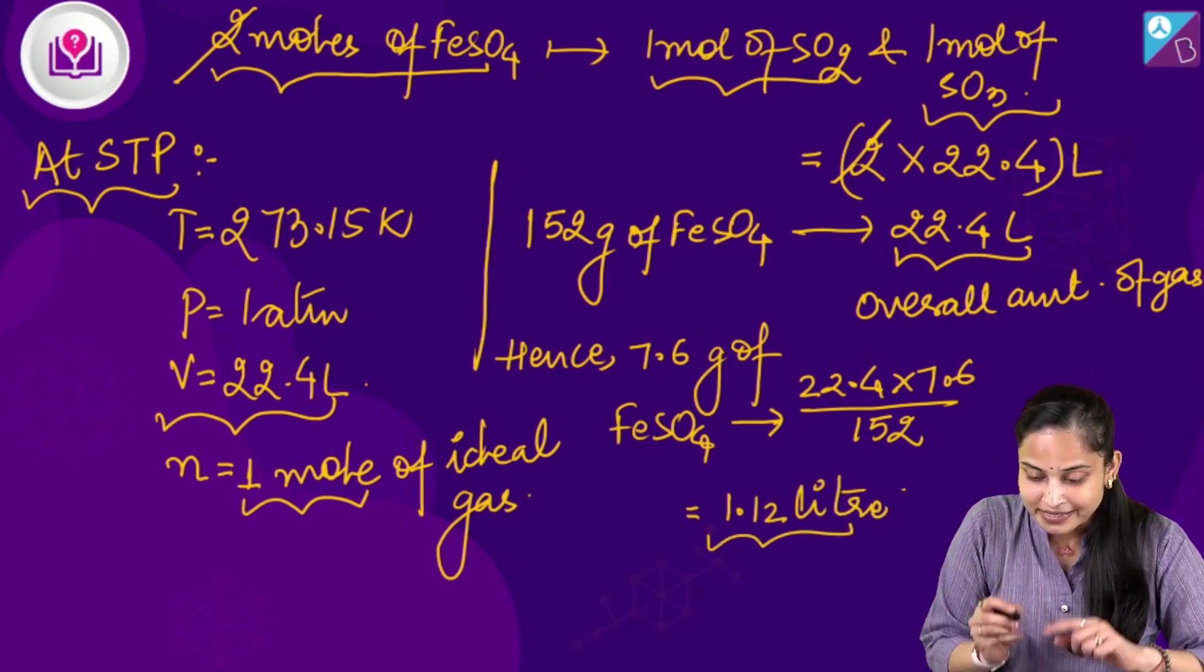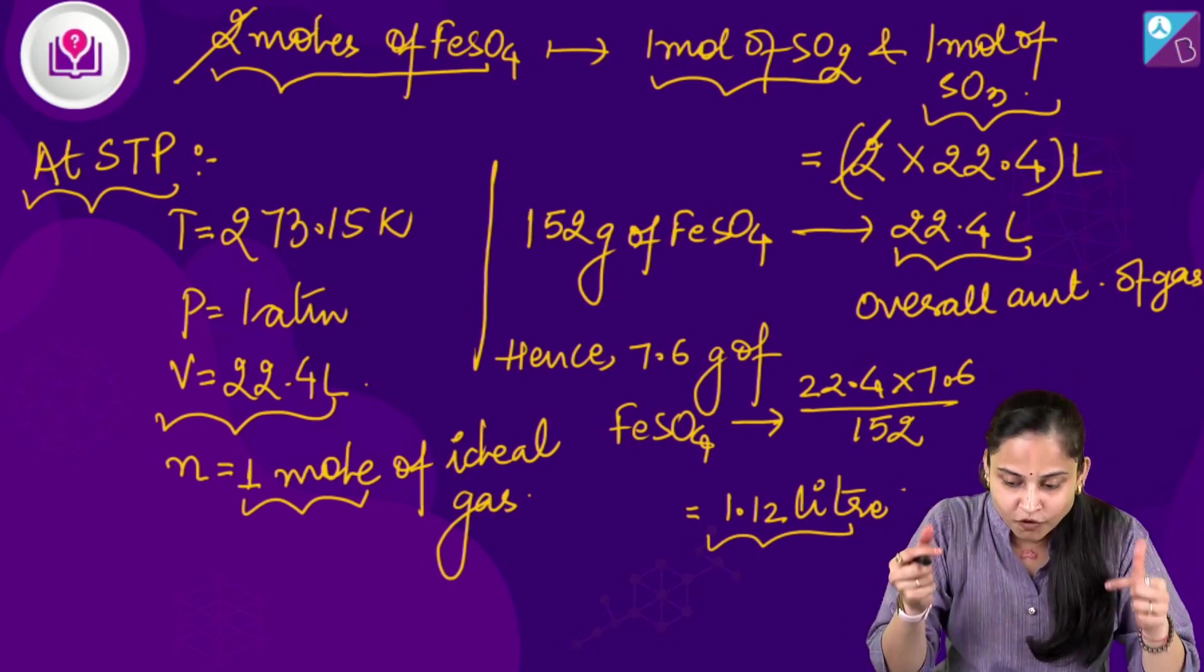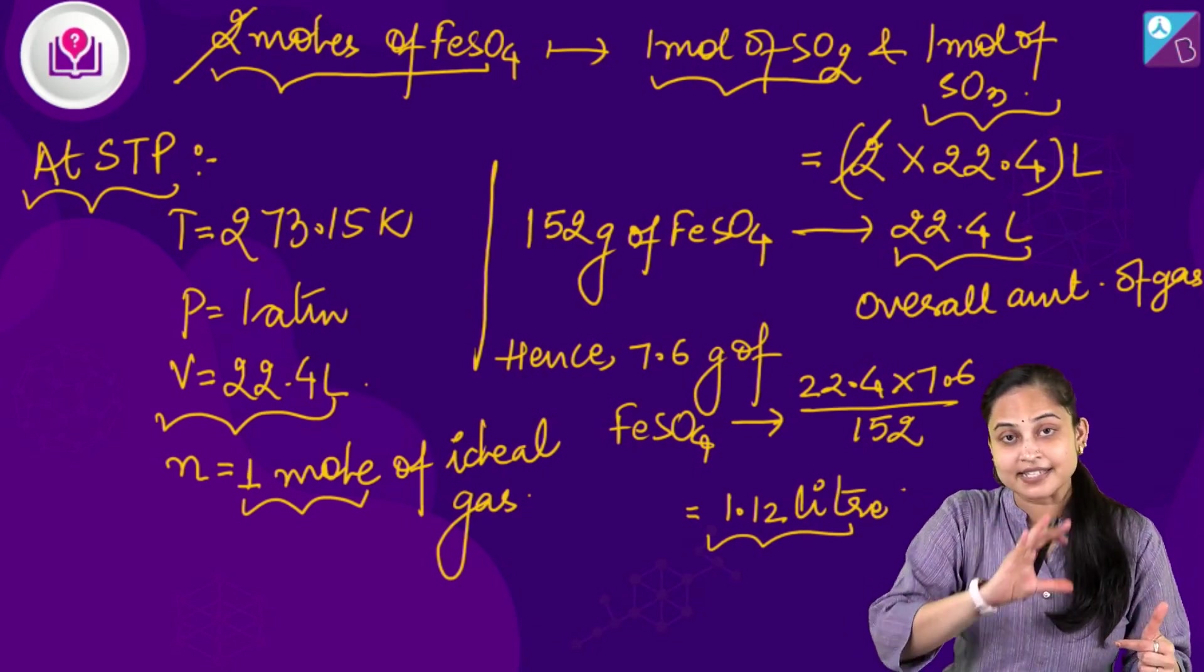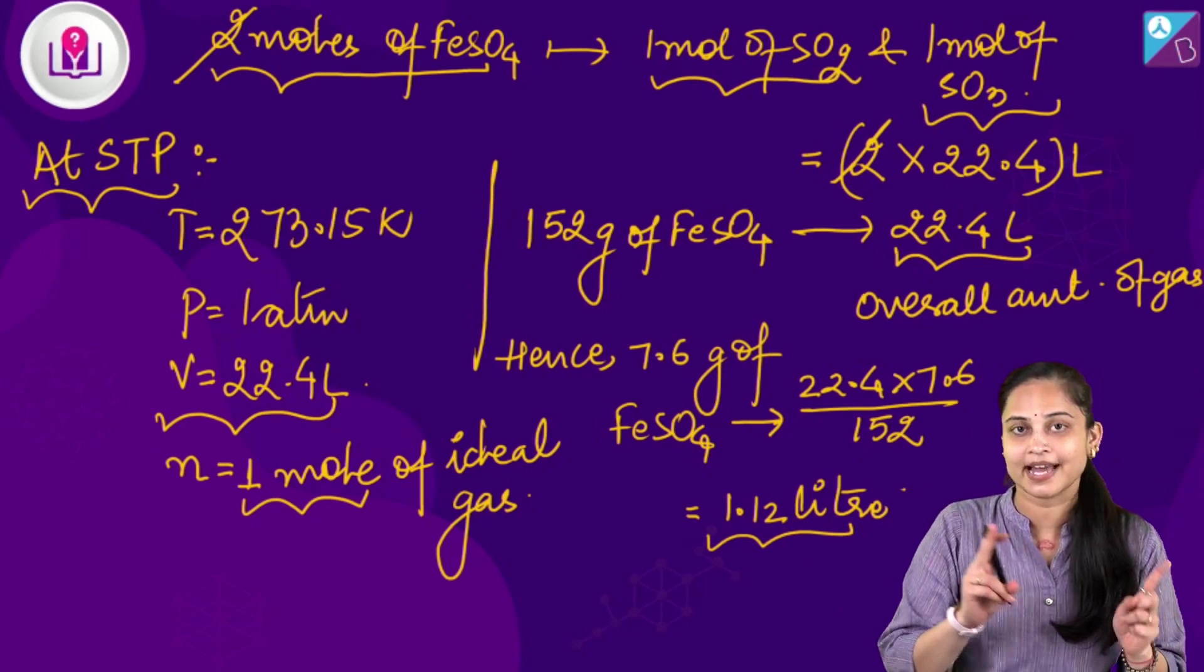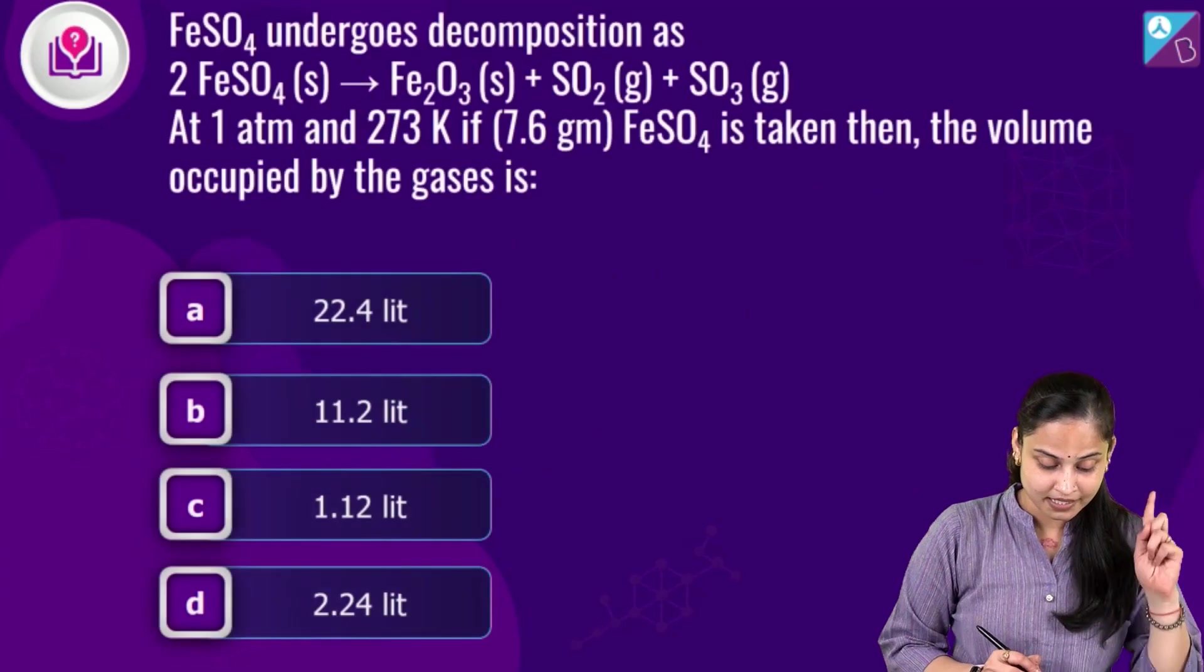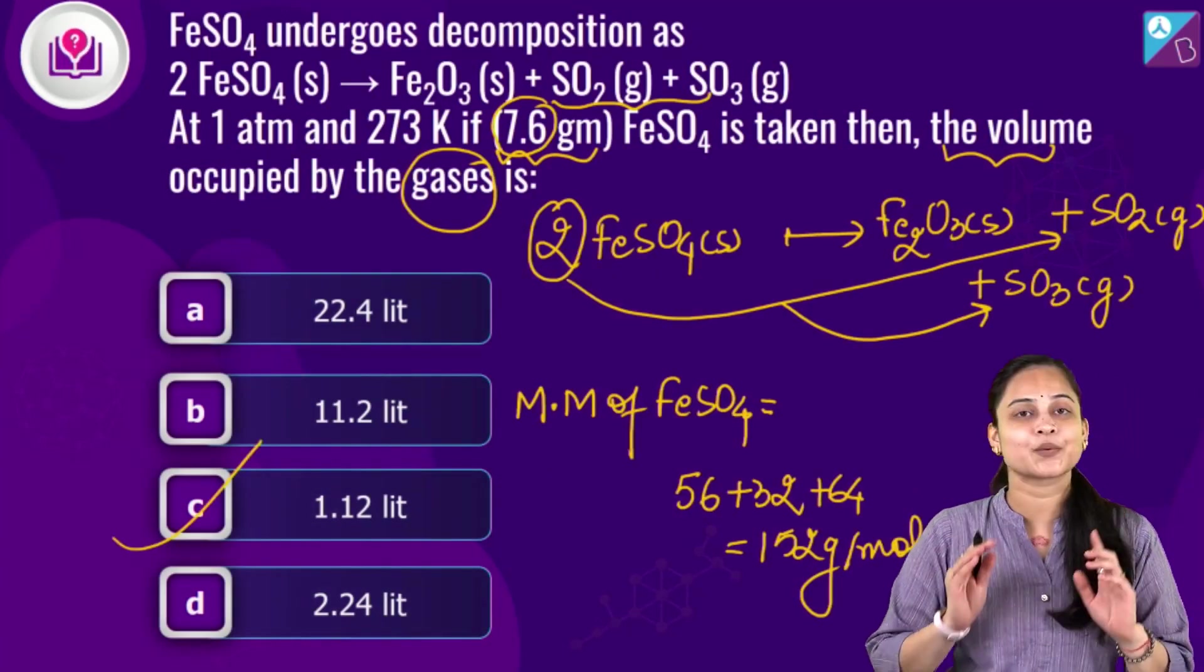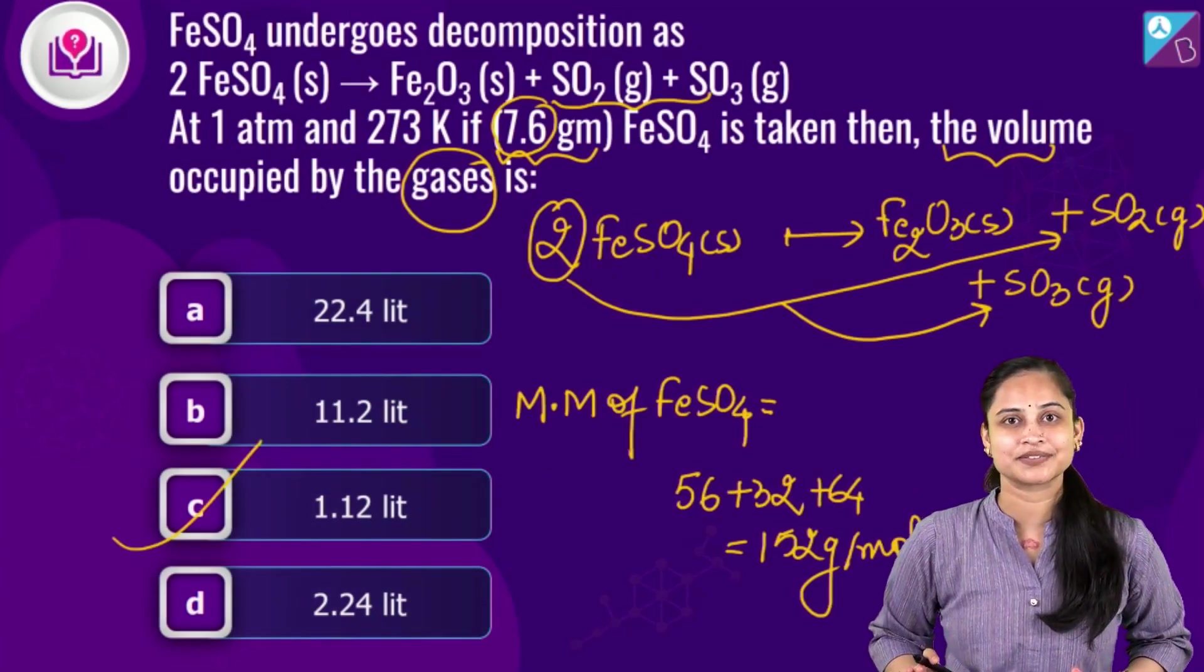Including sulphur dioxide and sulphur trioxide which means it is option number C, the right answer for the question asked for.